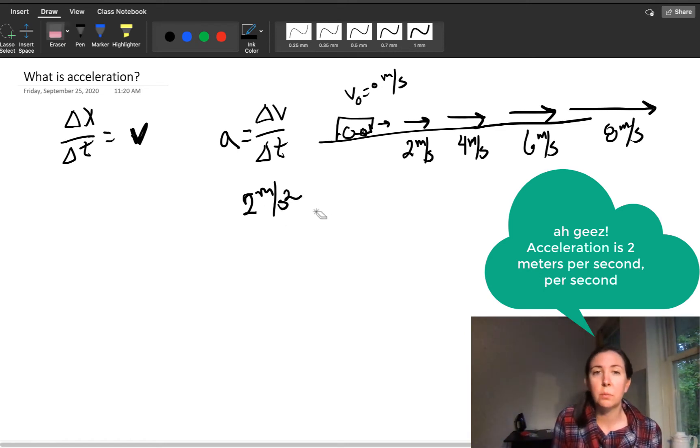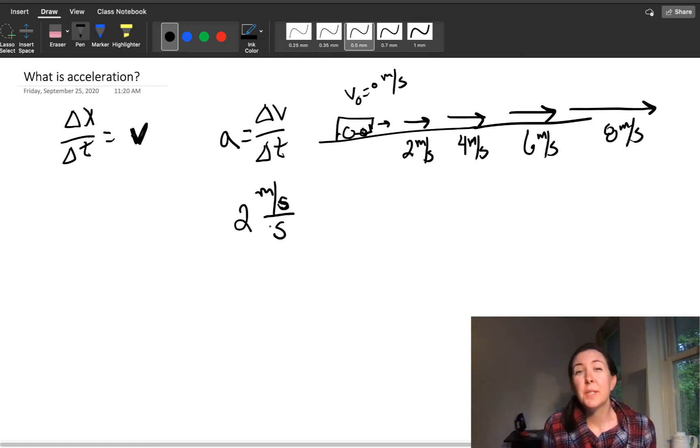Or 2 meters per second per second. So this idea that my acceleration is 2 meters per second per second says that my velocity is changing 2 meters per second every second.